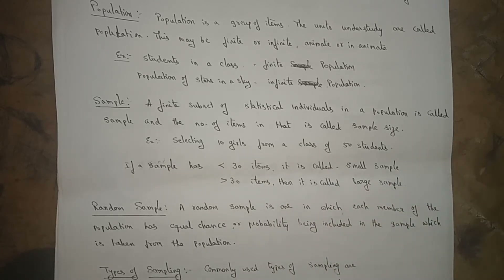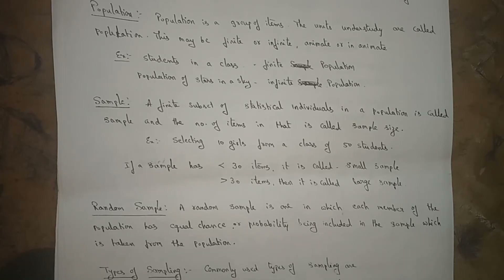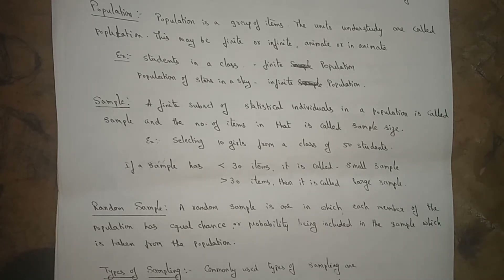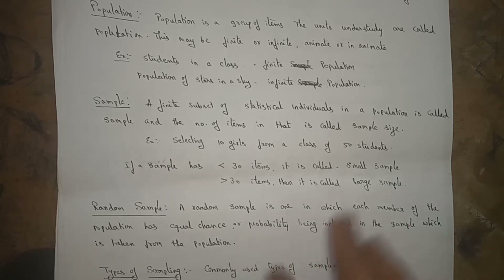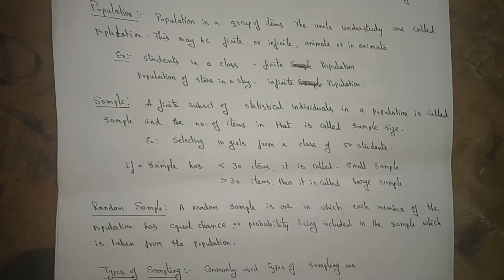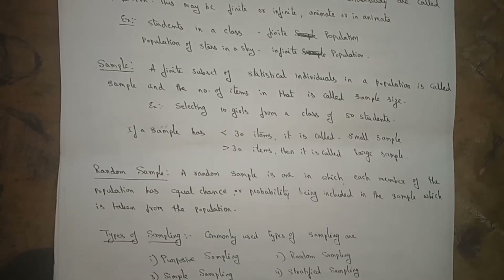The next definition is random sample. A random sample is one in which each member of the population has an equal chance — equal probability of being included in the sample. If it is having equal chances, then we say that it is a random sample.